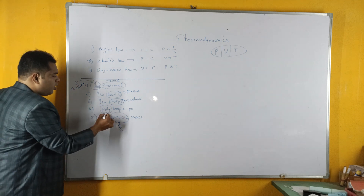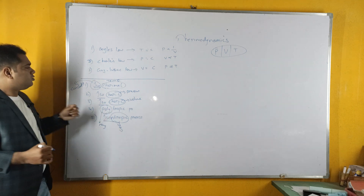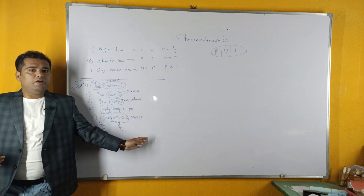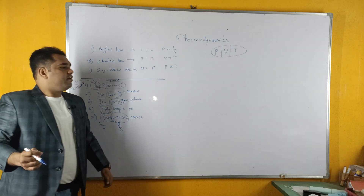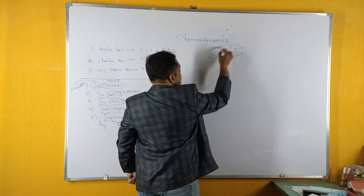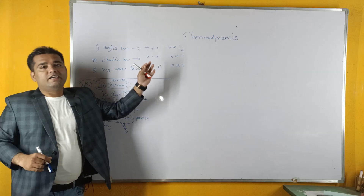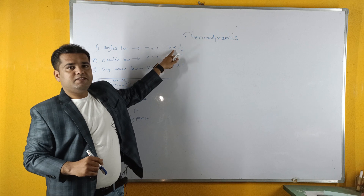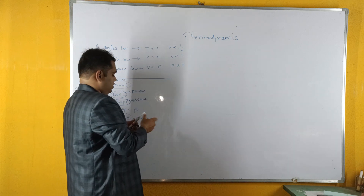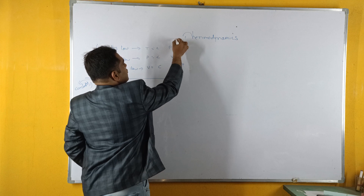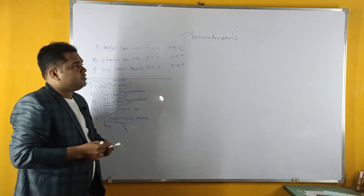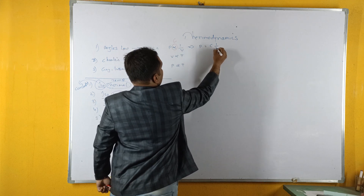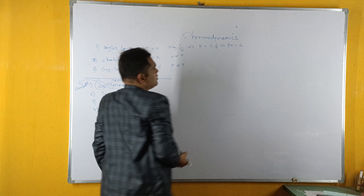Here we have 'poly', which means many. We are going to link up these three laws with the five thermodynamic processes and derive the relations between pressure, volume, and temperature. Coming back to Boyle's law: pressure is inversely proportional to volume. To remove the proportionality constant, we use a constant C. We can rewrite this as P equals C times 1/V, which implies PV equals constant.